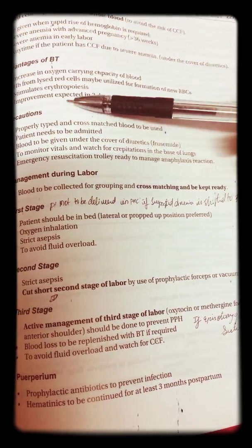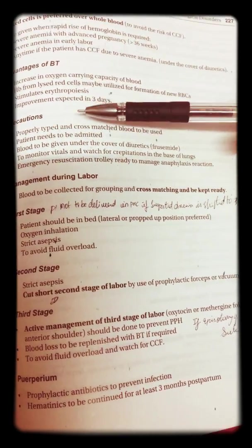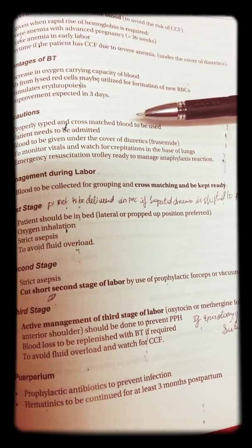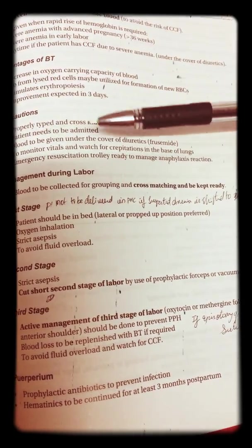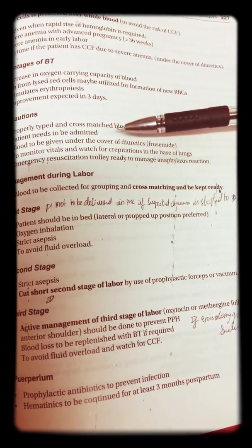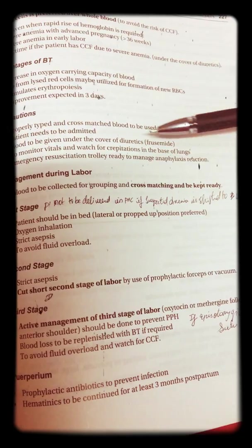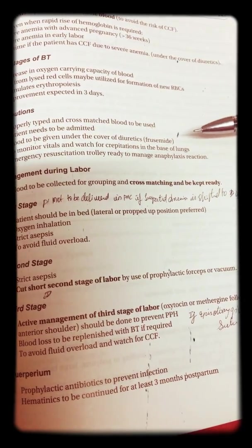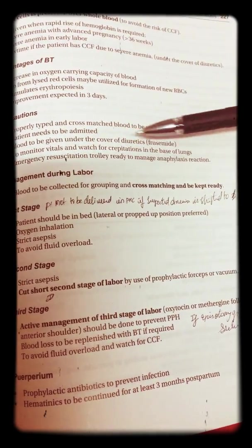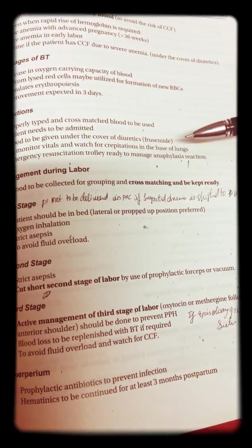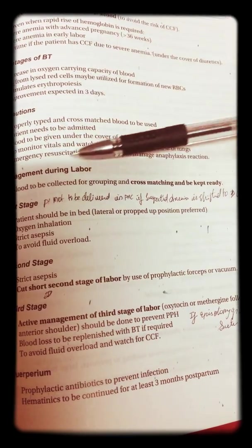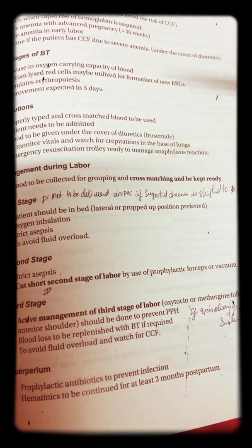Precautions for blood transfusion: properly typed and cross-matched blood to be used; patient needs to be admitted; blood to be given under cover of diuretics such as furosemide; monitor vitals and watch for crepitations at the base of the lung; emergency resuscitation trolley to be ready to manage anaphylactic reactions.